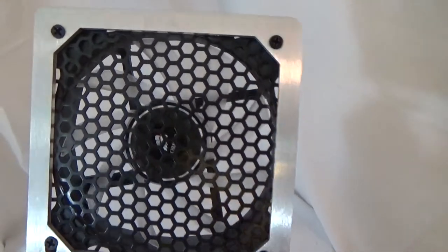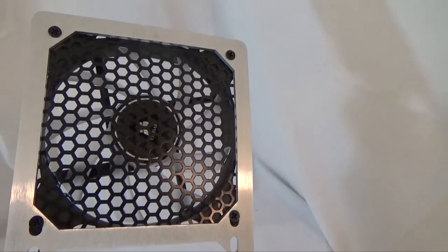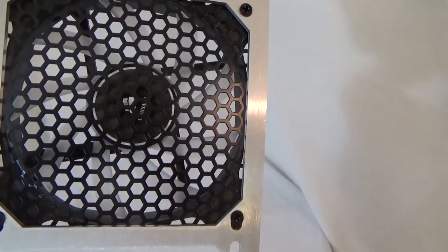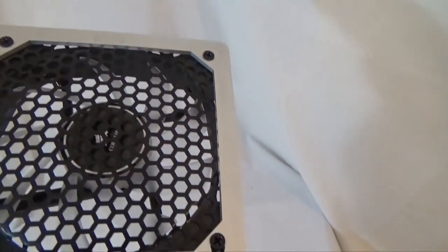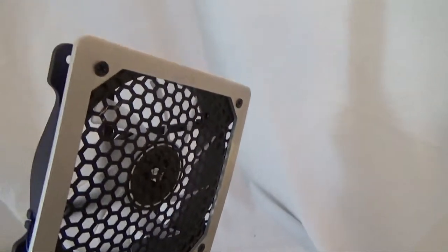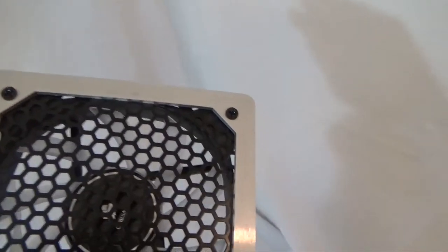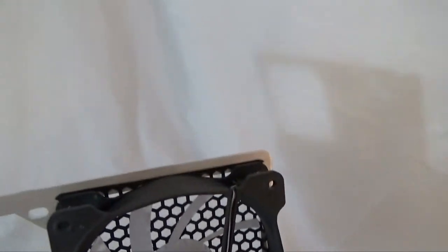And here, we attached a 120 millimeter fan to our fan grill. We put some mesh in front of it, some honeycomb mesh. And it really looks nice. And you can put this on the outside of your case. You can paint it or leave it stock aluminum.